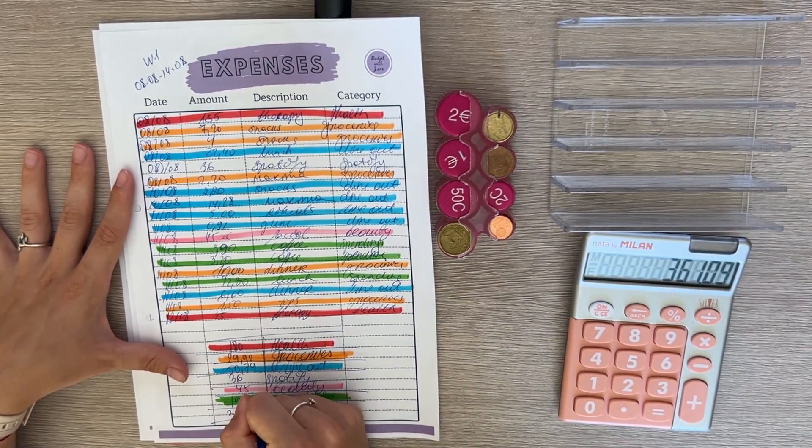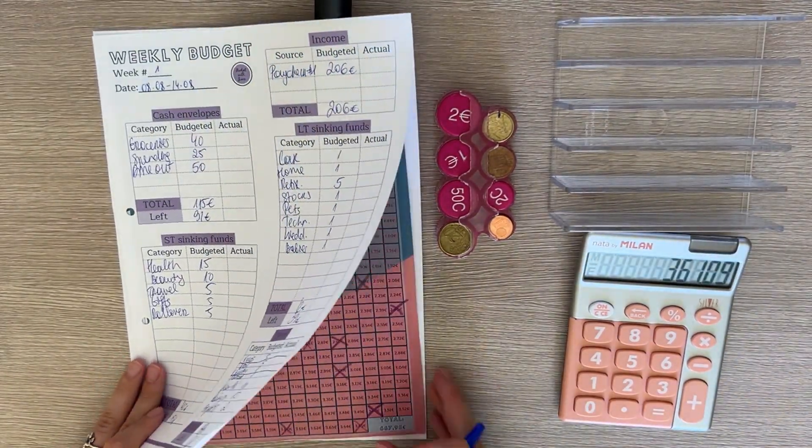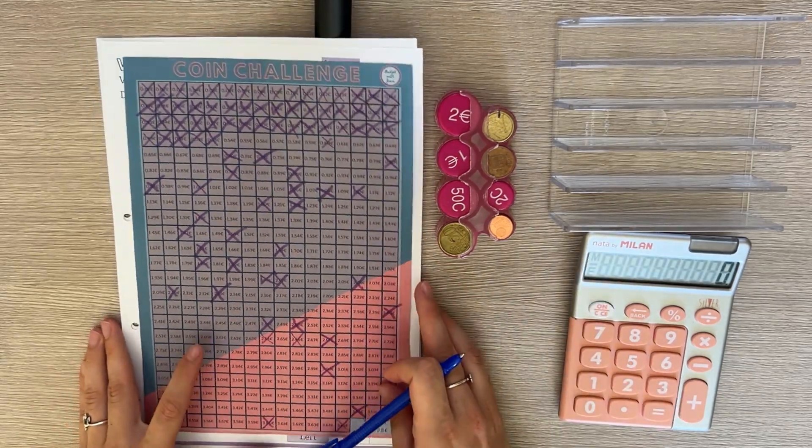Great, so the total for this week is 361 euros and nine cents. Those are the expenses, and now let's turn to our coin challenge next.